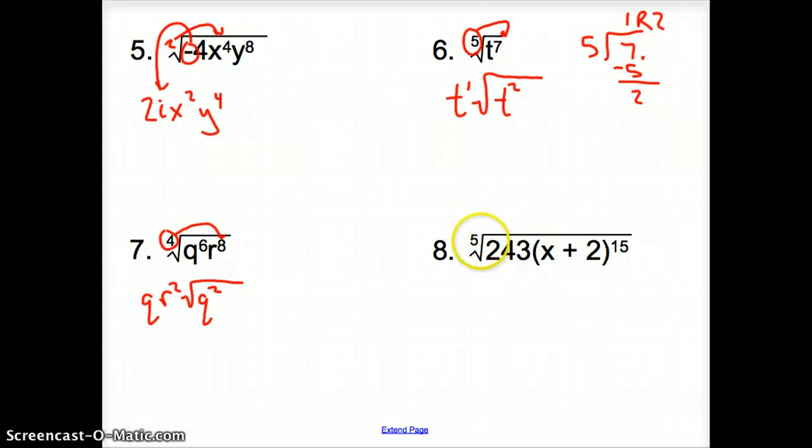And then 8. We have the 5th root again of 243 times the quantity. Ladies and gentlemen, please pay very close attention because the parentheses are to the 15th. So we can't touch what's inside those parentheses because it's to the 15th. It would look like x plus 2 times x plus 2. We just can't distribute that 15 back in. So the 5th root of 243, again,